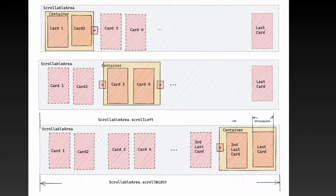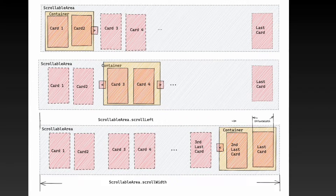Now that we talked about the component architecture, I want to talk about the scrolling behavior in circular and non-circular scenarios. Let's start with the non-circular scenario. The non-circular carousel is pretty straightforward. Suppose you have a container on a page that has a width of 500 pixels, and you have a total of 4 cards. Each card is 200 pixels. Suppose only 2 cards can fit into the container — we can use the container's scroll left property to keep track of what cards should be shown.